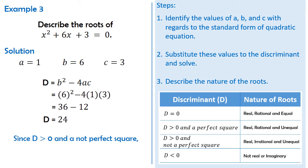Since the discriminant is a positive number and is not a perfect square, therefore, the nature of the roots are real, irrational, and unequal. This can be checked by determining the roots of the given quadratic equation using any of the methods of solving quadratic equations.